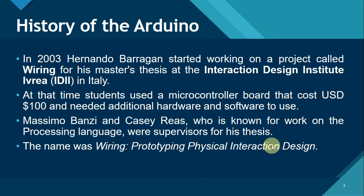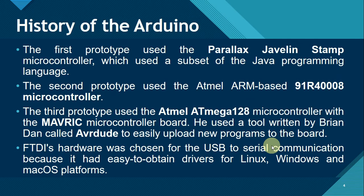The name of Hernando's project was called Wiring: Prototyping Physical Interaction Design. The first prototype used the Parallax Javelin Stamp Microcontroller, which used a subset of the Java programming language. The second prototype used the Atmel ARM-based 91R4008 microcontroller, and the third prototype used the Atmel ATmega128 microcontroller with the Maverick microcontroller board. He used a tool written by Brian Dan called the AVR Dude to easily upload new programs to the board. He also used FTDI — Future Technology Devices International, a semiconductor company specializing in USB technology — for USB to serial communication because it had easy-to-obtain drivers for Linux, Windows, and Mac OS platforms.